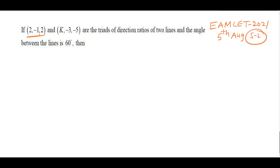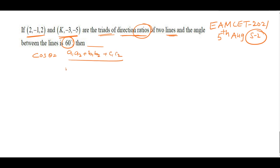Next: if (2, −1, 2) and (k, −3, −5) are direction ratios of two lines and the angle between them is 60°, find the relation for k. This is MSet 2021, 5th August, Shift 2. The formula is cos θ = (a₁a₂ + b₁b₂ + c₁c₂) / (√(a₁²+b₁²+c₁²) × √(a₂²+b₂²+c₂²)).